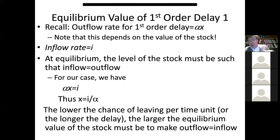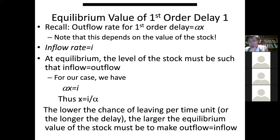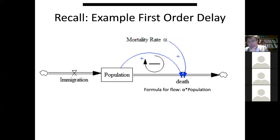Alternatively, viewing from the inflow: if 10 people per day enter the ICU, the equilibrium population of that ICU will be much higher than if it's one person per day — even if they leave in a day. The equilibrium value of the stock is given by I over alpha. That's the value at which outflow equals inflow.